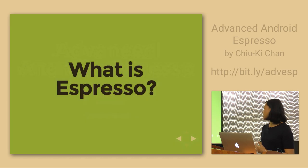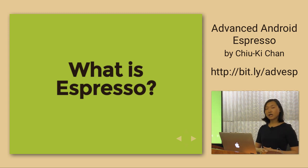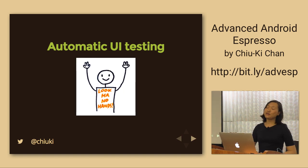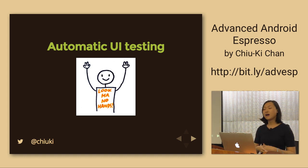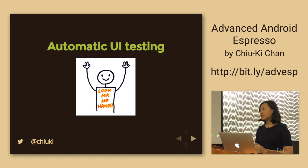Let's get started — what is Espresso? How many of you have done any Android testing? How many have done Espresso testing? Almost half of you, great. For those who didn't raise your hand, Espresso is automatic UI testing, or as I like to call it, no-hands testing. Usually when running UI tests you have to be there clicking buttons and typing and verifying. Espresso simulates user actions and verifies what's displayed on screen, which is different from JUnit testing where you're just testing logic without seeing the UI.